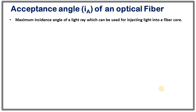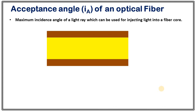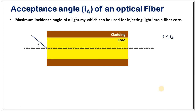Let's understand it from this picture. This is an optical fiber — the yellow region is the core and the brown region is the cladding. This is the axis of the optical fiber. If your incident ray makes an angle i at the interface of air and the dielectric medium, there will be refraction, and let's say the refraction angle is theta. As this ray goes into the optical core, it will meet the interface of core and cladding with an angle phi. If phi is greater than the critical angle, the ray will be totally internally reflected, and as a result, light will propagate through the optical core.